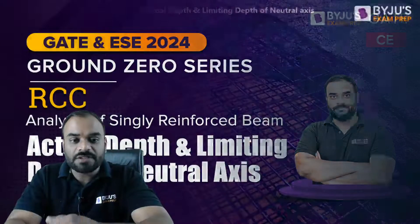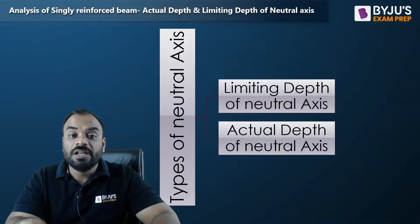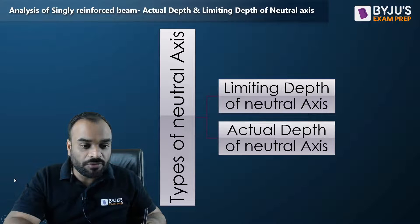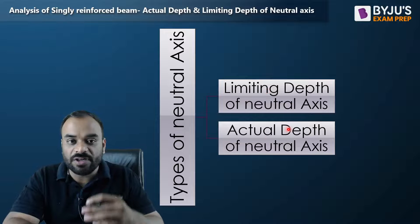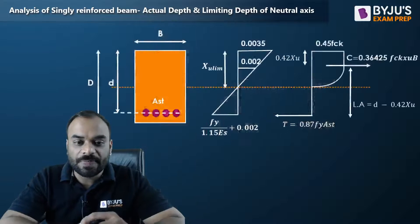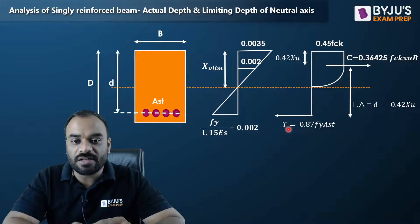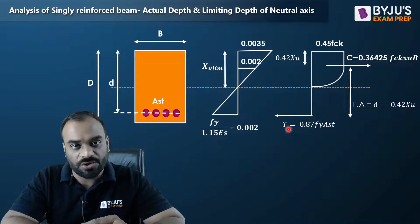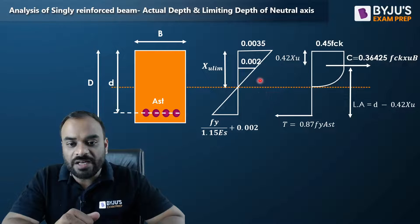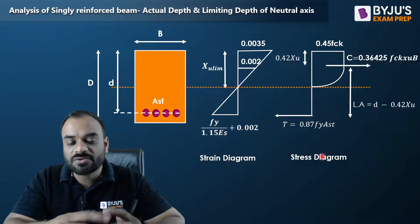There are basically two types of neutral axis. One is the limiting depth of neutral axis and the second is the actual depth of neutral axis. We have already discussed the complete stress block parameter — the stress diagram, strain diagram, and the cross section. This one is our strain diagram and this one is our stress diagram.